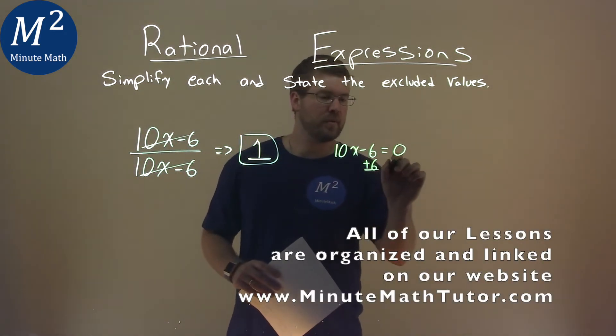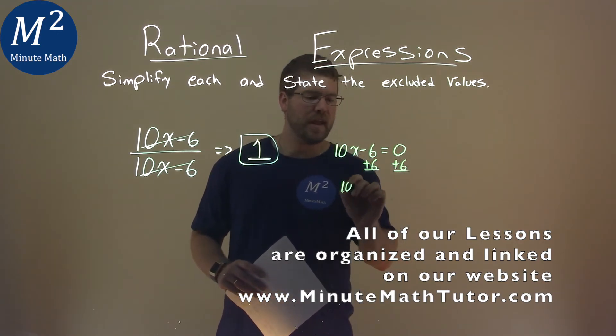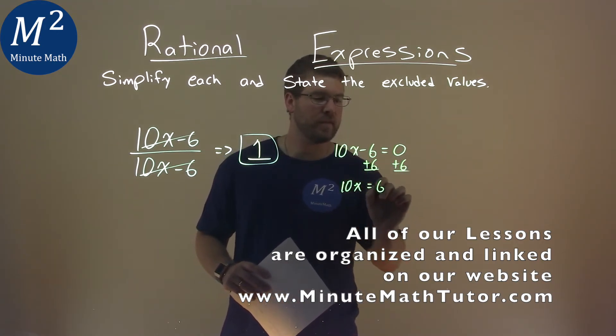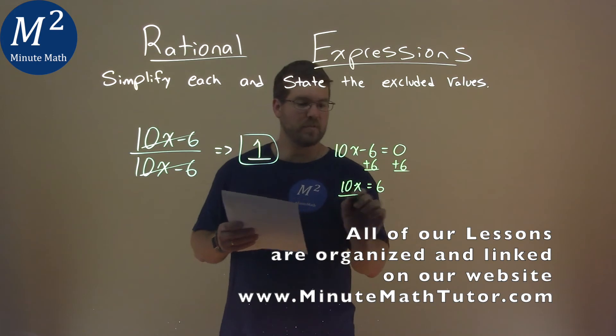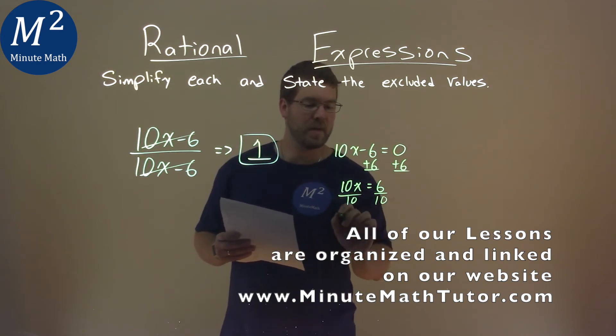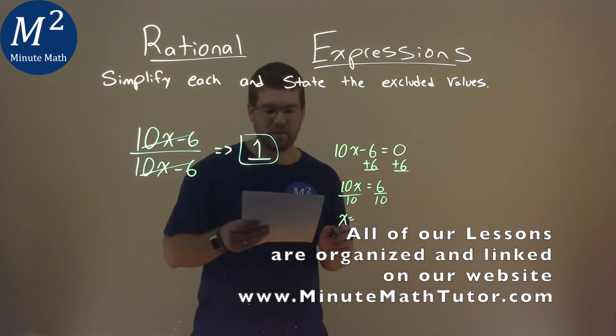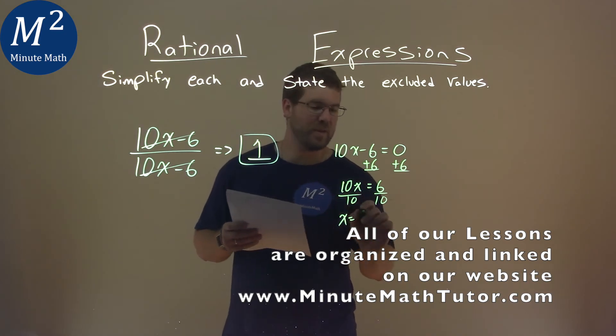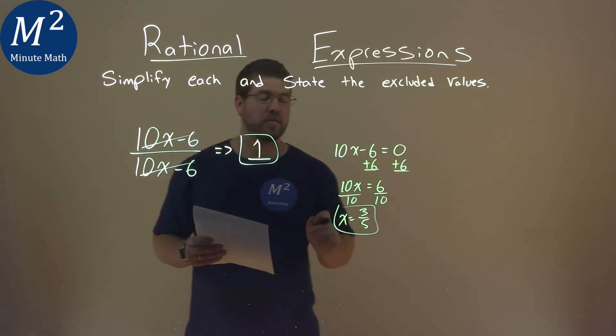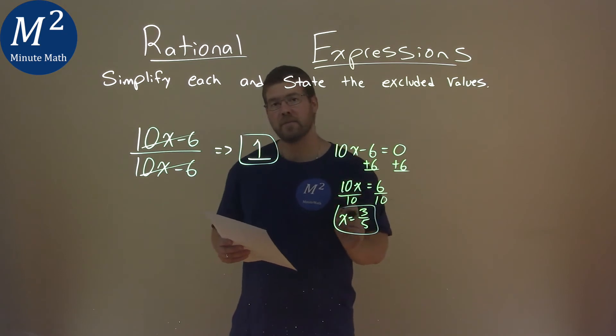We add a 6 to both sides, we have 10x equals a positive 6. Divide both sides by 10, and we have x equals 6 divided by 10, which is 3 fifths. And so the excluded value here is 3 fifths.